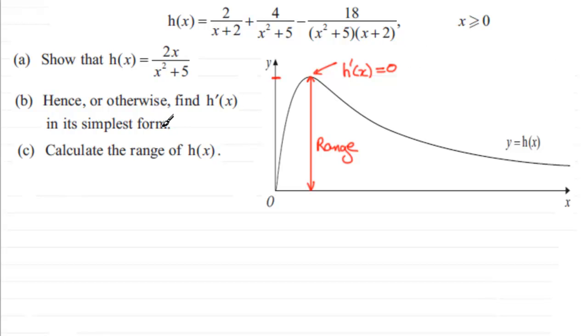So that's how we do this. We found out in the earlier part that h'(x) equals 2 multiplied by 5 minus x squared, all over x squared plus 5 all squared.